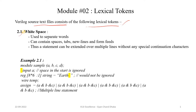White space is basically used to separate different words. A white space can be a normal space, a tab, a line feed, a new line, or a form feed. Using white space, we can extend a statement over multiple lines without using any special continuation character.